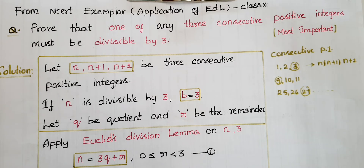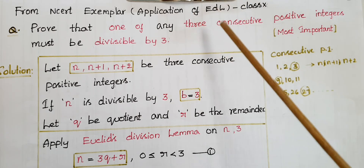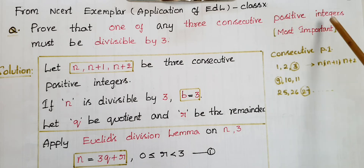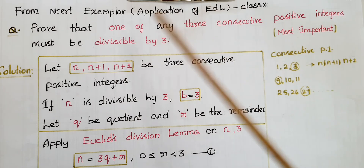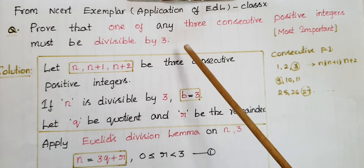Hello everyone, today I am going to tell the solution of a problem which is an application of Euclid's division lemma from real numbers class 10th: prove that one of any three consecutive positive integers must be divisible by three.